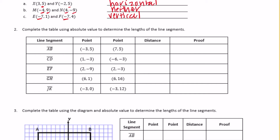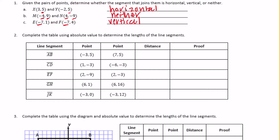Number 2: complete the table using absolute value to determine the lengths of the line segments. Remember that we can find the distance by adding or subtracting the absolute values. We figure out which to do based on whether the points are on opposite sides of 0 — then we add — or on the same side, then we subtract.